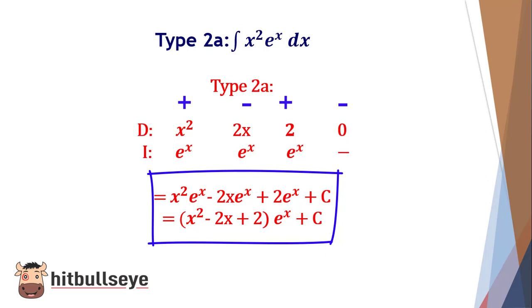You can simplify it as per the options given to you. You can just take e^x as a common factor and then in brackets write x² - 2x + 2 plus a constant C. That is all.